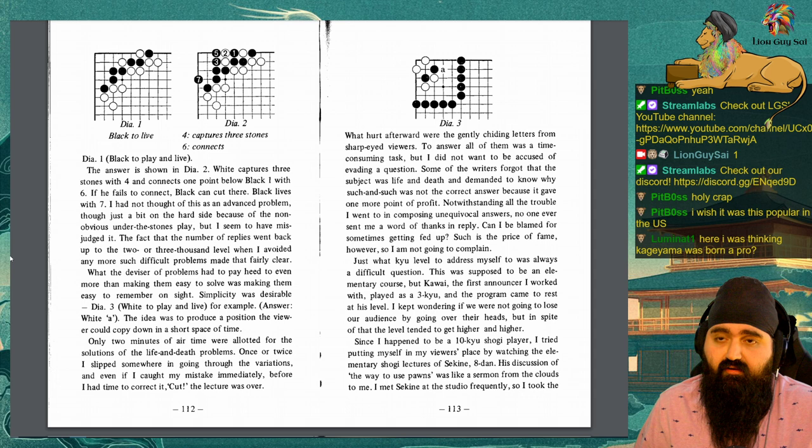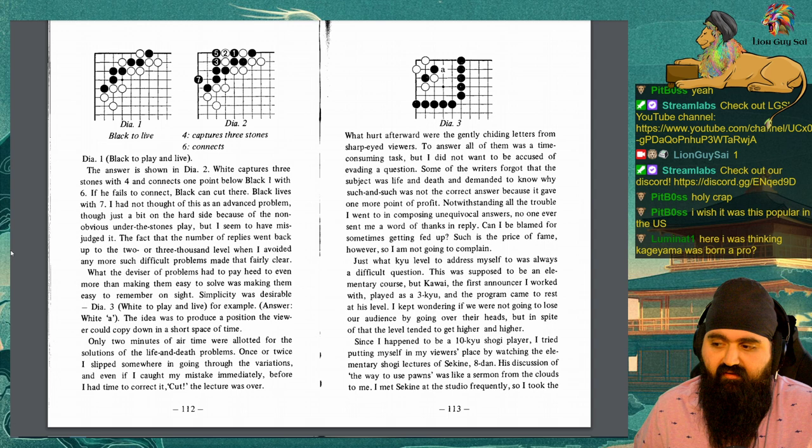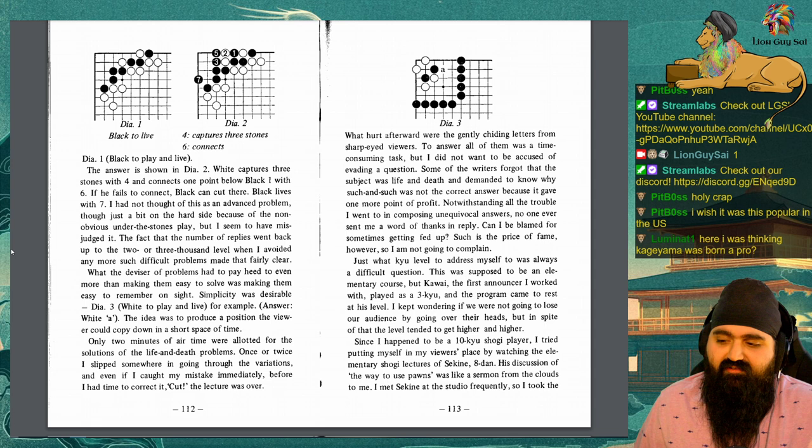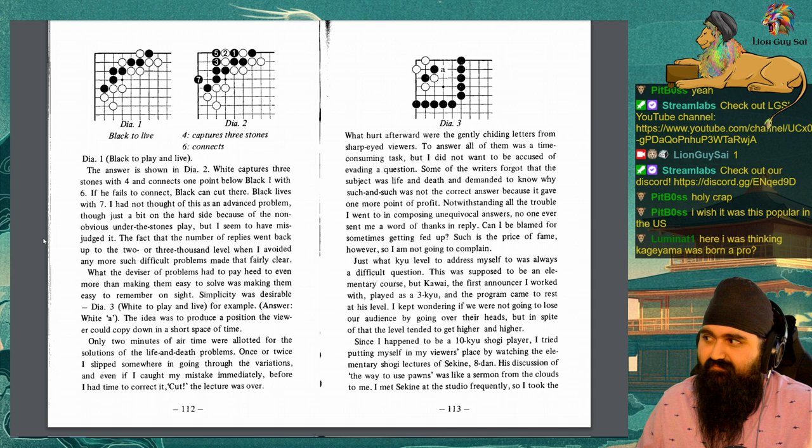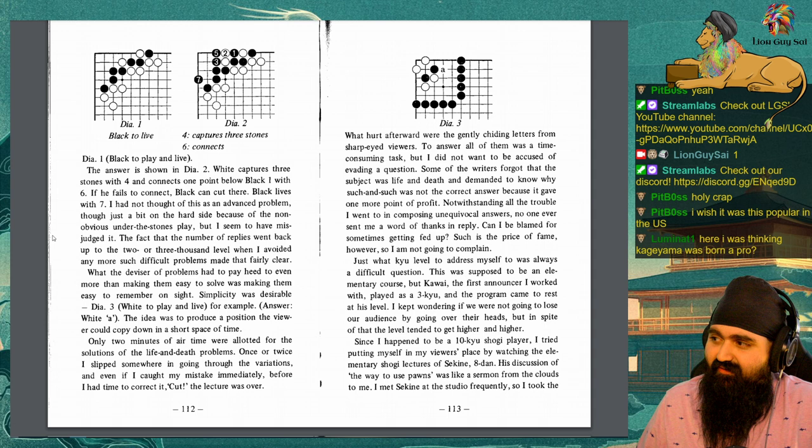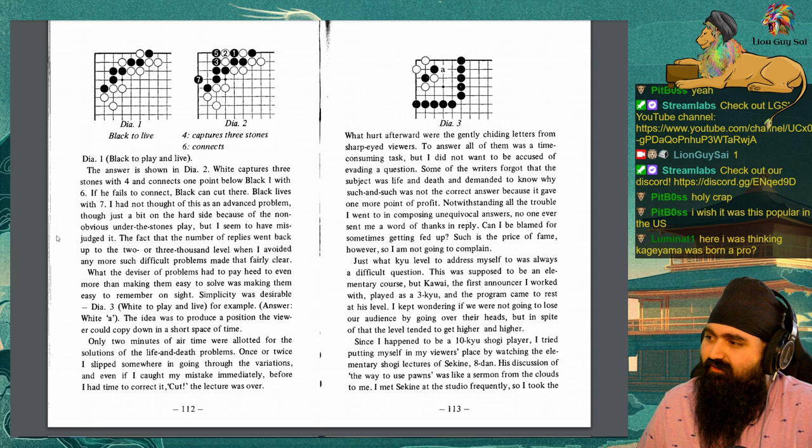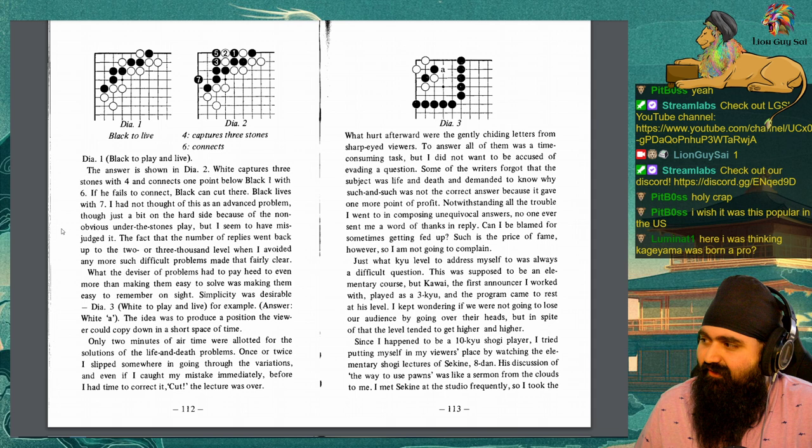What the deviser of problems had to pay heed to, even more than making them easy to solve, was making them easy to remember on sight. Simplicity was desirable. Diagram 3, white play to live, for example. The idea was to produce a position the viewer could copy down in a short space of time. Only 2 minutes of airtime were allotted for the solutions of the life and death problems. Once or twice, I slipped somewhere in going through the variations, and even if I caught my mistake immediately, before I had time to correct it, CUT! The lecture was over. What hurt afterward were the gently chiding letters from sharp-eyed viewers. To answer all of them was a time-consuming task, but I did not want to be accused of evading a question.